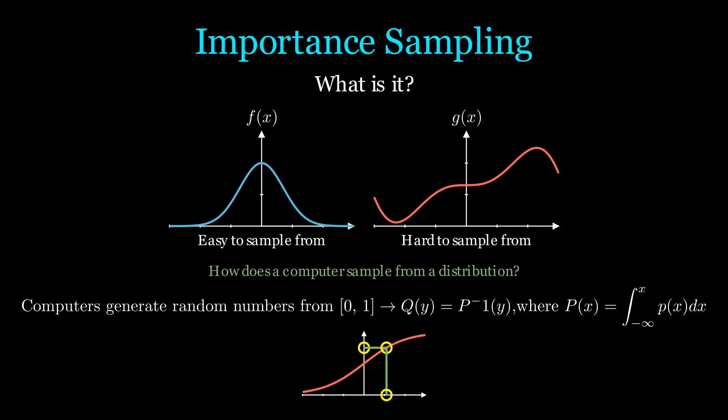Higher probabilities lead to a steeper section of the CDF, making it more likely to be picked. Thus, if we can't analytically compute the CDF, we cannot directly sample from the distribution.